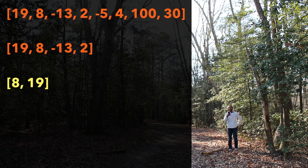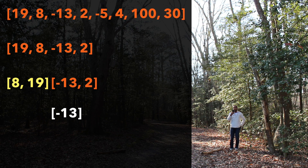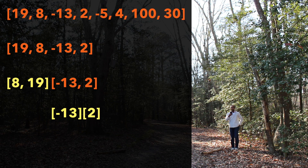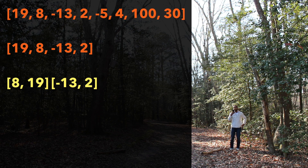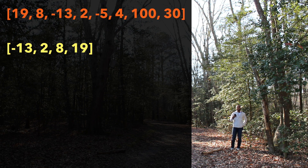8, 19 is the left portion of the call for 19, 8, negative 13, 2. Now we need to go right and sort negative 13, 2. We go left and reach our base case of negative 13, return. Then we go right and reach our base case of 2. Now we have two sorted subarrays — negative 13 and 2. We merge them into the sorted array negative 13, 2, which is the right portion. We now merge both portions into negative 13, 2, 8, 19.